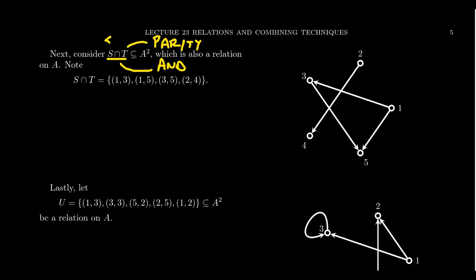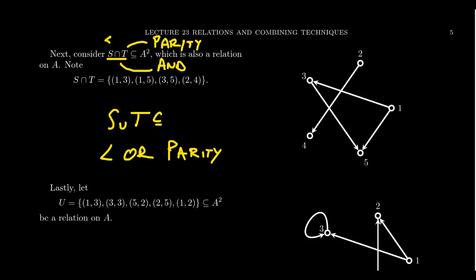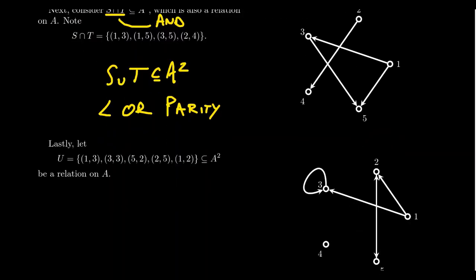You could similarly take S union T, which would be the relation where you want 'less than' or 'same parity.' Since S and T are both subsets of A squared, their union is also a subset and thus also a relation. You can also talk about complements and set differences of relations — all those set mechanics apply, because relations themselves are subsets.